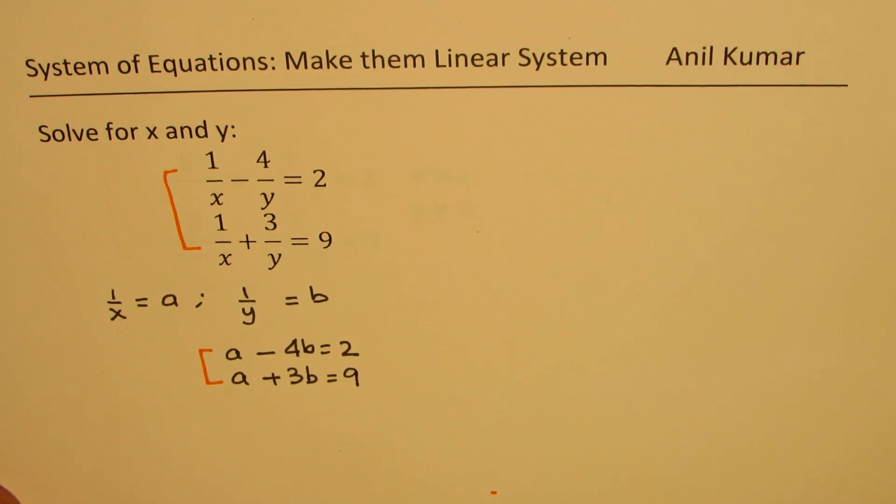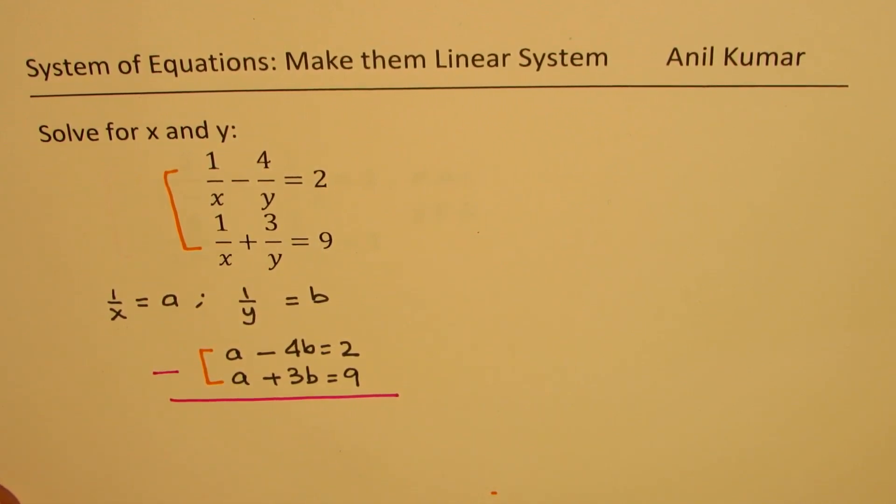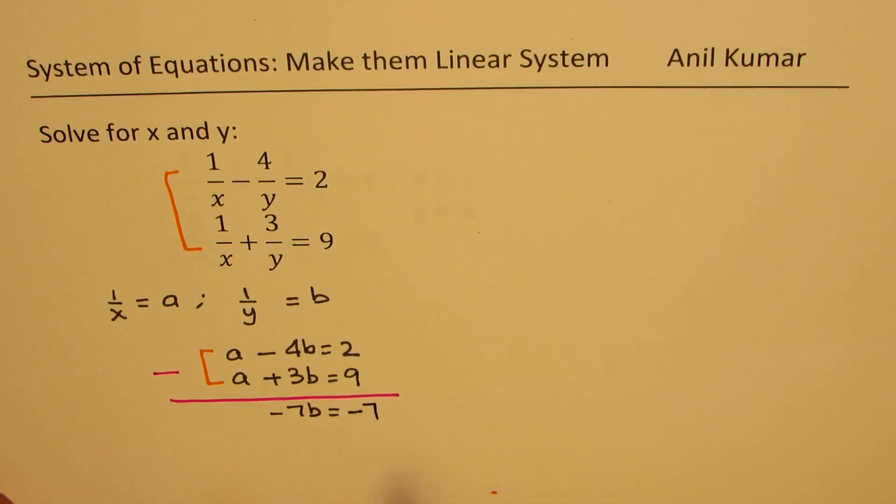Now this linear system of equation can be easily solved. We can take away one equation from the other. So a and a will cancel. 4b minus 3b gives us minus 7b equals 2 minus 9 which is minus 7, or we get b equals minus 7 divided by minus 7 which is plus 1.